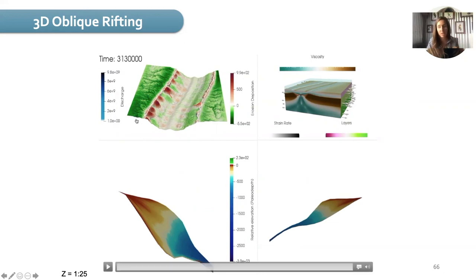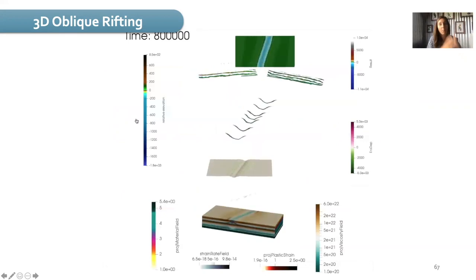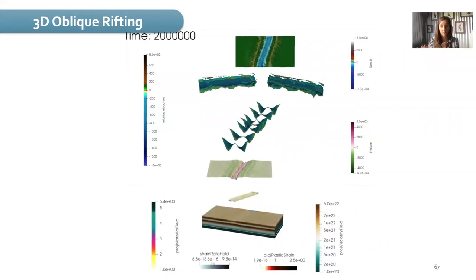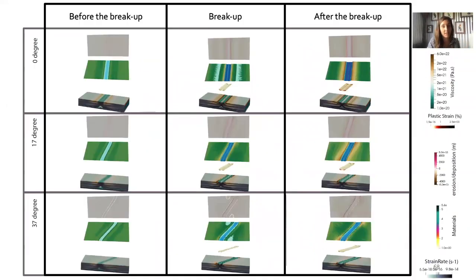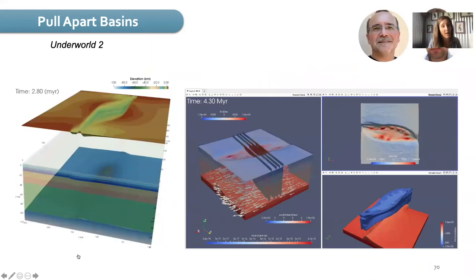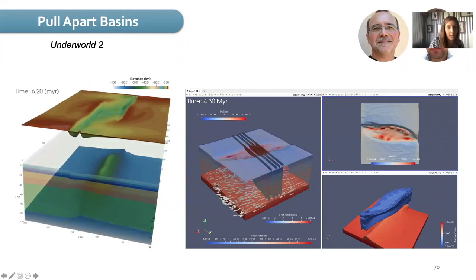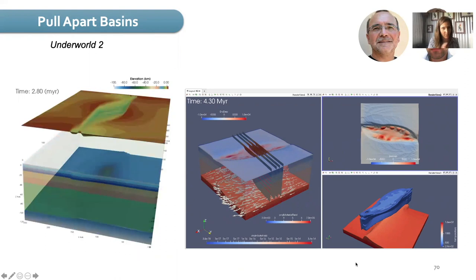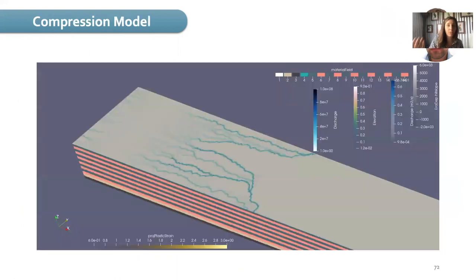Now we have more extended, higher-resolution models where we can also look at the obliquity of the rift and how sedimentation differs before the breakup, during the breakup, and after the breakup, depending on the obliquity. We also have pull-apart models. Here you have the work that Patrice, Tristan, and Luke Hardiman started with Underworld 1, and here is what we have now with Underworld 2 — a model from Patrice and a model from Romain, available on the UW Geodynamics GitHub.